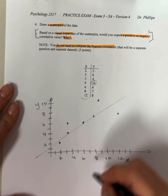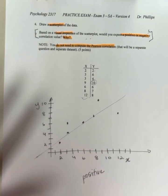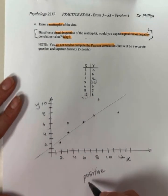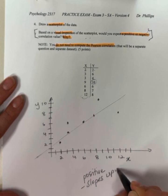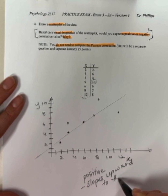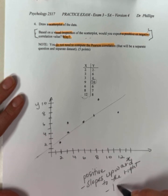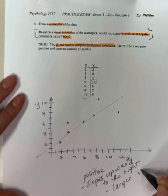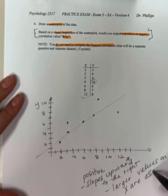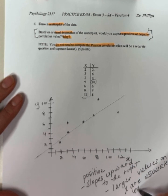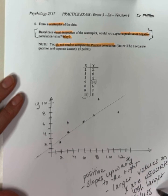Would you expect a positive or negative correlation value? Positive. And then, in terms of why, slopes upward to the right. Or, you could say, larger values on x are associated with larger values on y.